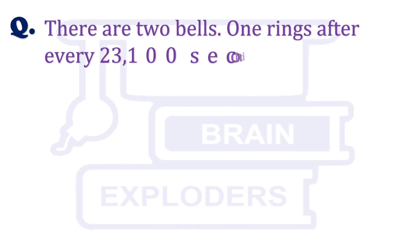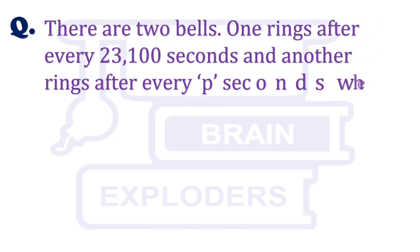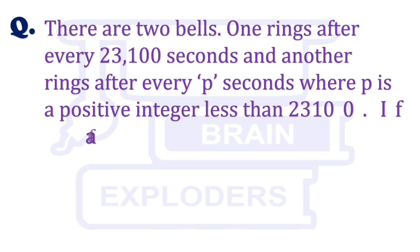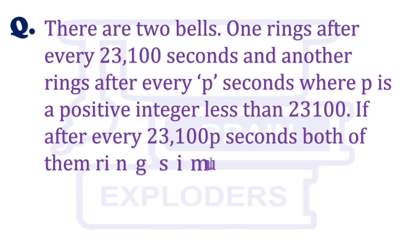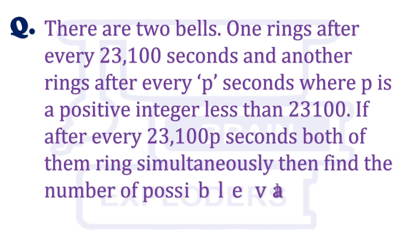There are two bells. One rings after every 23,100 seconds and another rings after every p seconds, where p is a positive integer less than 23,100. If after every 23,100p seconds both of them ring simultaneously, then find the number of possible values for p.